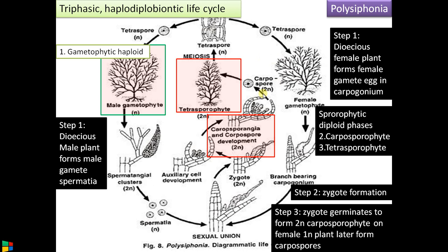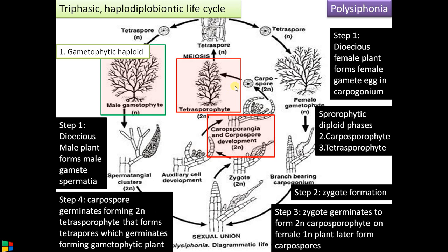These diploid carpospores directly give rise to the independent diploid plant called the tetrasporophyte — this is the third phase. In step 4, the tetrasporophyte undergoes meiosis, forming tetraspores. Half of these tetraspores germinate into male gametophytes and the other half into female gametophytes, thus completing the life cycle.